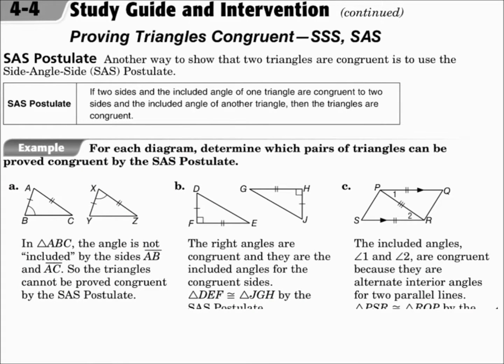Another way to show that two triangles are congruent is the Side-Angle-Side postulate, or SAS. If two triangles have two pairs of congruent sides and the angle between them, then they're congruent. Please make sure that the angle you use is the angle between the two sides, just like it's written: SAS. The A is between the two S's, and the angle you use has to be between the two sides.